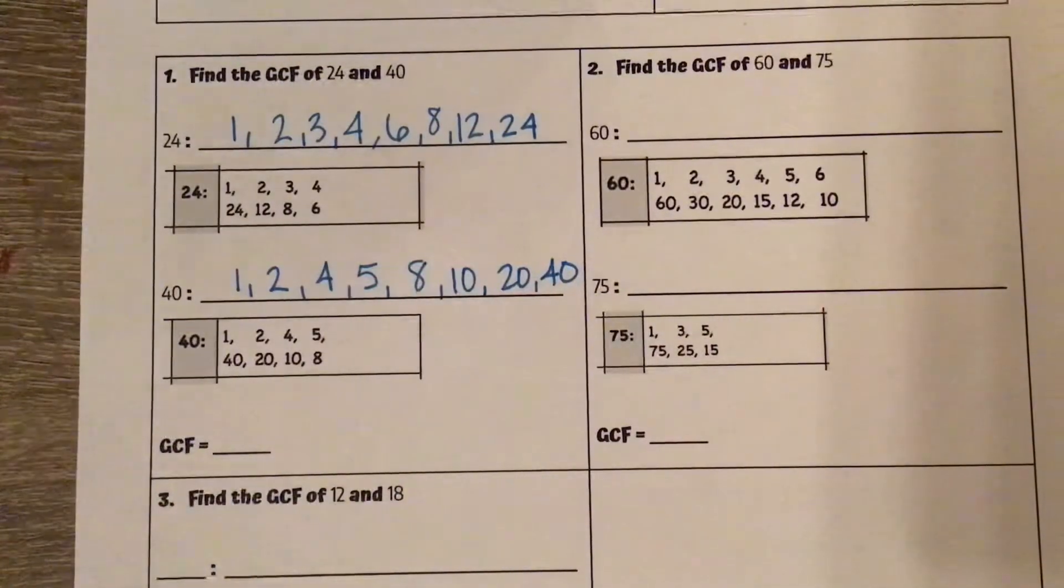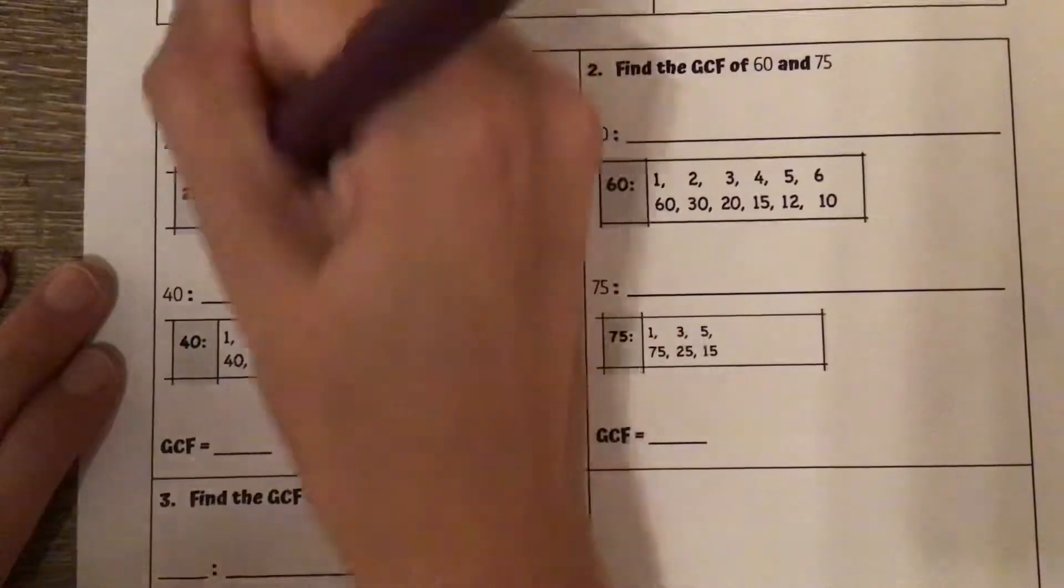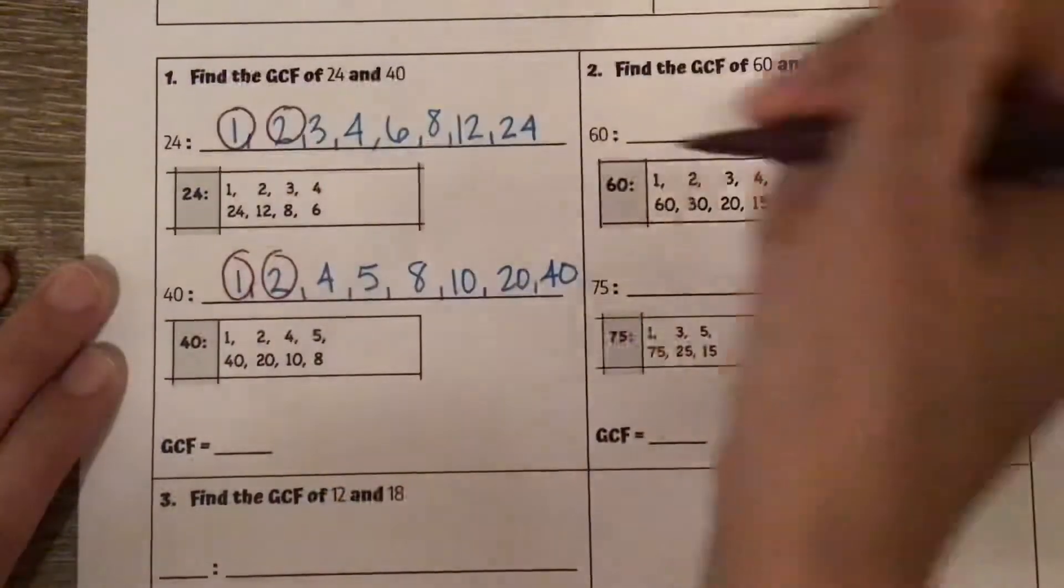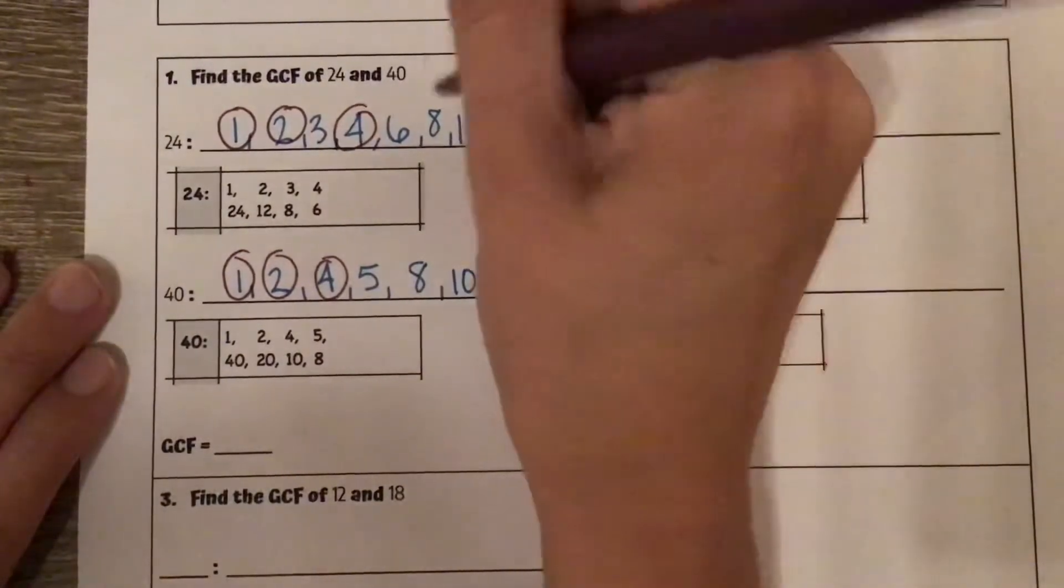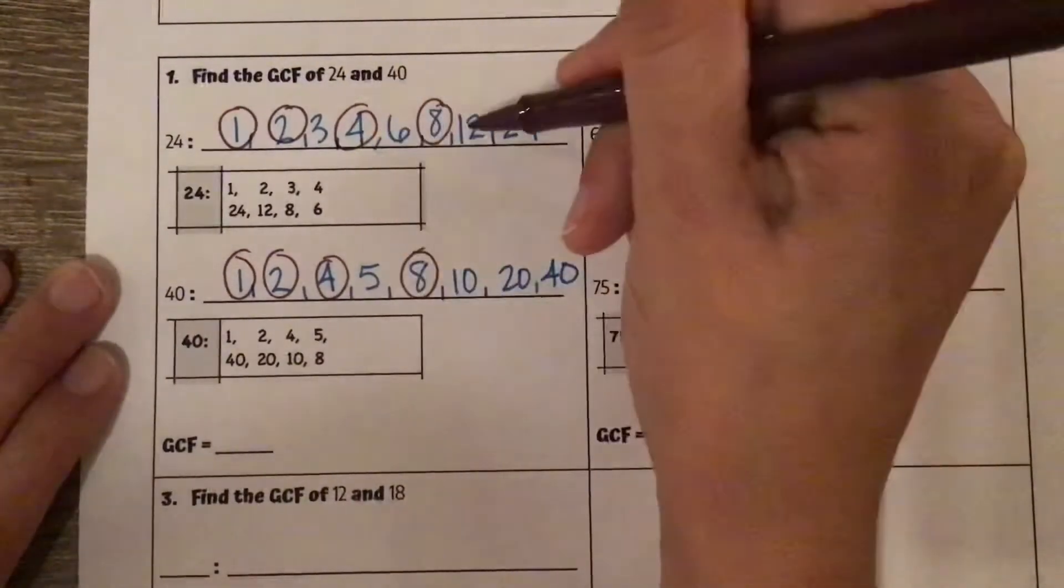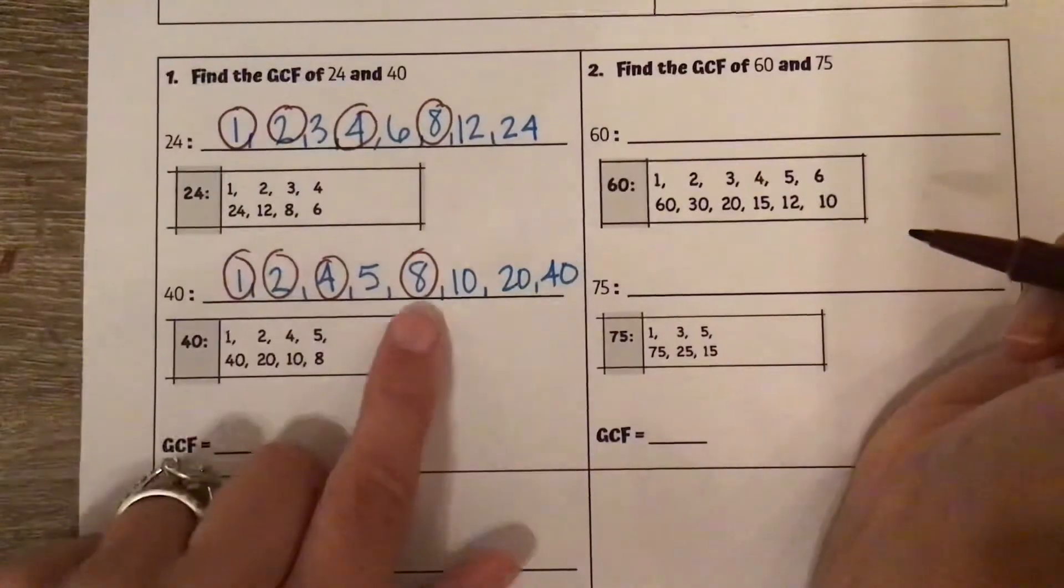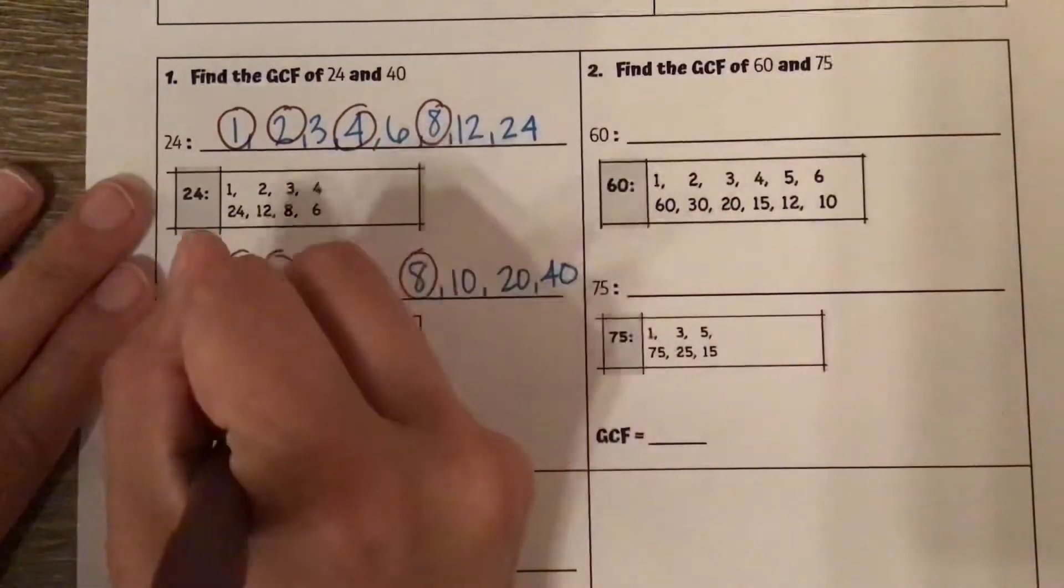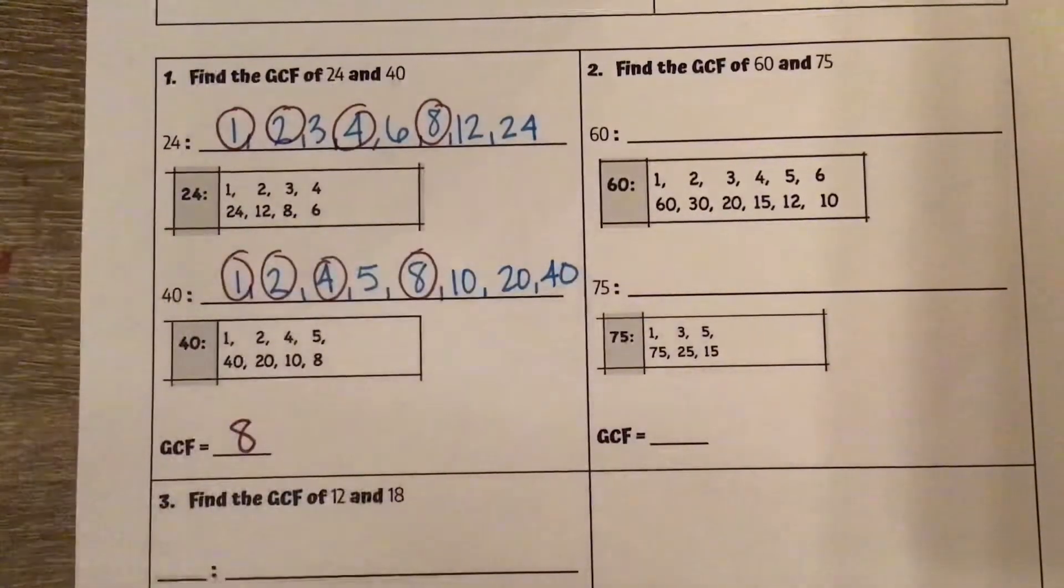Now we're going to go through and circle all the ones that they have in common. They share 1, they share 2, not 3, but 4, not 6, but 8, not 12, not 24. So the highest number that they both share is 8. So their GCF is 8.